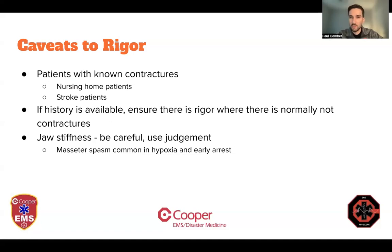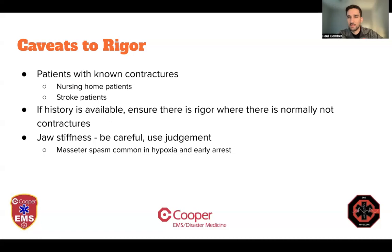Jaw stiffness might be a good thing to check in those patients, but even with jaw stiffness, be careful and use your judgment. Just like the pupils are muscles, jaws are controlled by big muscles — and when there's no oxygen and no blood flow, they get irritated and can clench down. Jaw stiffness can be really common in early cardiac arrest and hypoxia. So maybe try moving the arms and legs too. If the arms, legs, and hands are all moving loosely and the jaw is just a little stiff, I would err on the side of not calling that rigor versus stiffness in other parts of the body or the jaw being completely immobile. It's a clinical judgment call, but just know that jaw spasm is a thing early in cardiac arrest.